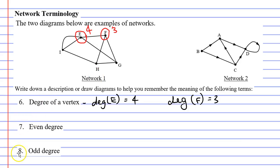So now we have terms seven and eight which are talking about having an even degree or an odd degree. An even degree just means that the degree is an even number. So if we look at vertex E which has a degree of four because four is even we say it has an even degree.